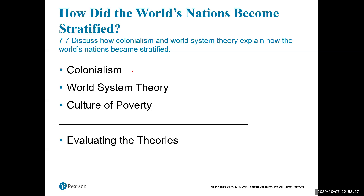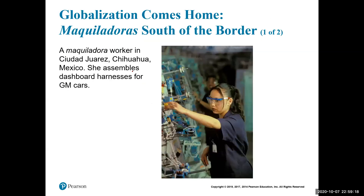World system theory examines how economic and political connections develop among nations, linking the world's countries together — essentially our global trading system. It involves the core and the periphery — both are parts of the world system. If we don't communicate and trade, nations function independently. We have to work together to bring things together. If we lose those connections, we risk runaway globalization of capitalism and loss of trade control.